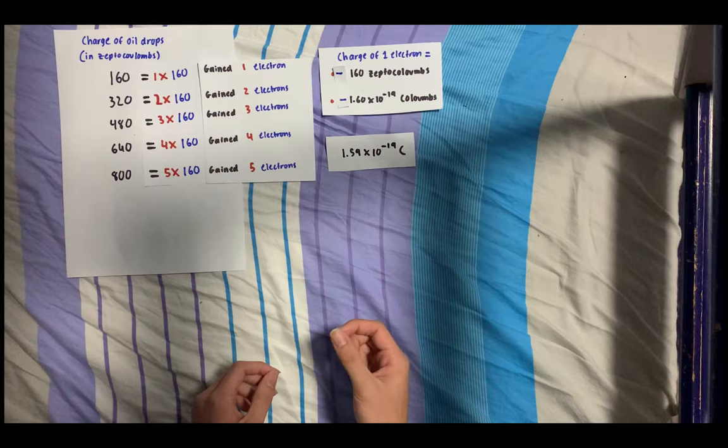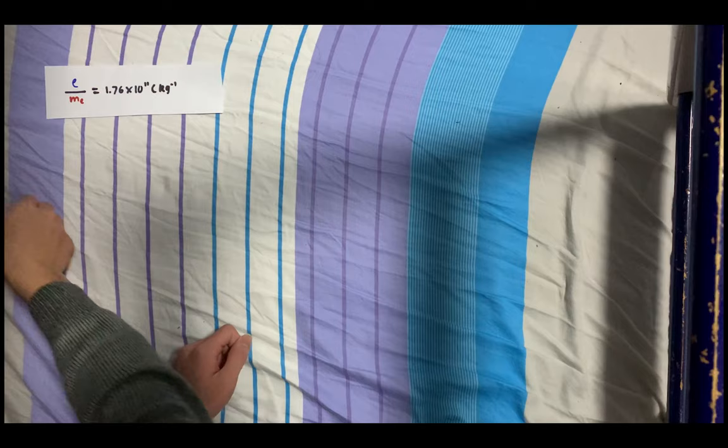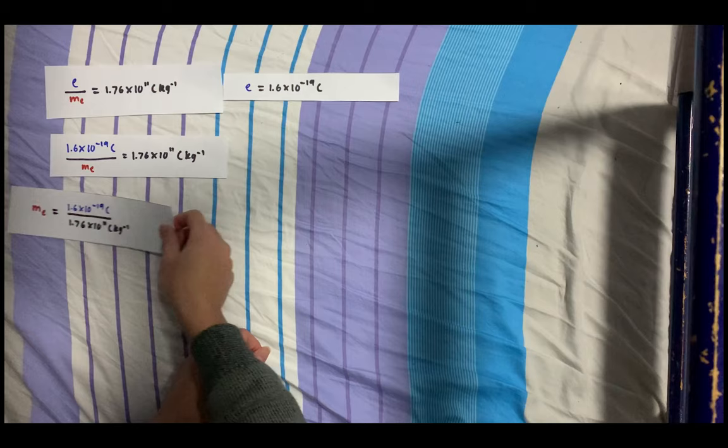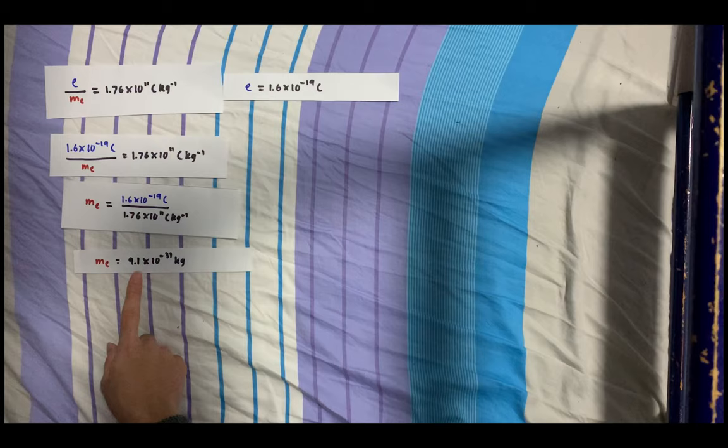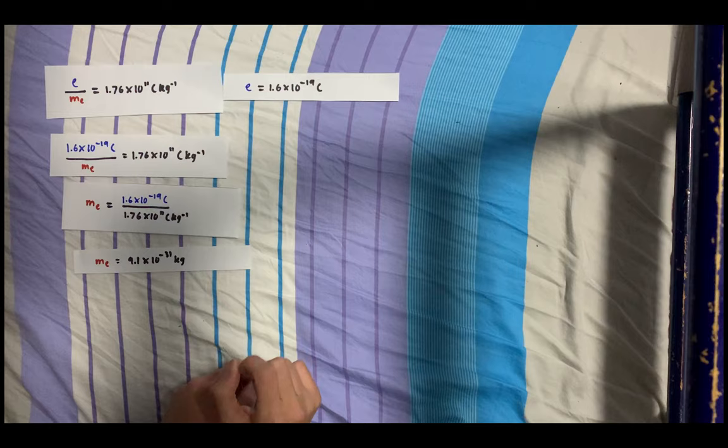Now recall that JJ Thomson had discovered the charge-to-mass ratio of an electron, which is this value here. With the discovery of the charge of an electron from the oil drop experiment, Thomson was able to use it to determine the mass of an electron. By substituting the charge of an electron and rearranging to make the mass the subject, Thomson was able to calculate the mass of an electron to be 9.1 × 10^-31 kilograms. Note that there's no negative sign for the charge of an electron because the sign only indicates that an electron is negatively charged, and mass cannot be negative.